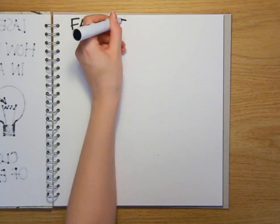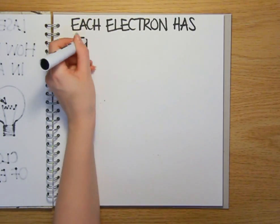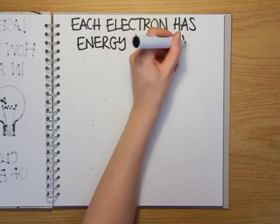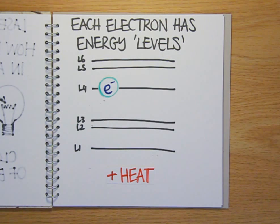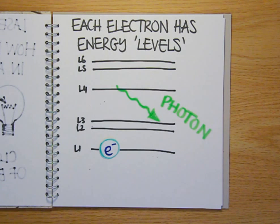Each of these electrons can have different discrete amounts of energy, which can be thought of as representing different energy levels. And if we heat up the material, we can excite the electrons and make them jump up to a higher energy level than they would normally occupy. But they don't stay up there forever. And when they drop back down, they can shed the extra energy by emitting a packet of light called a photon.